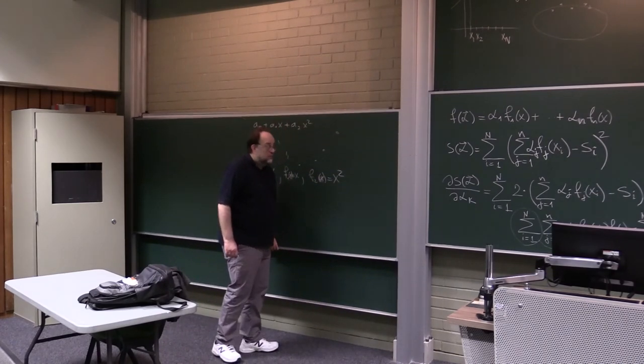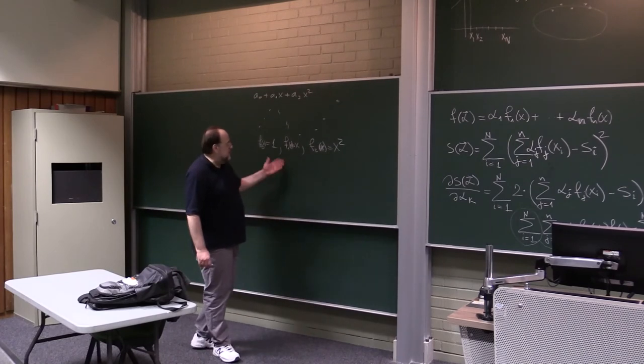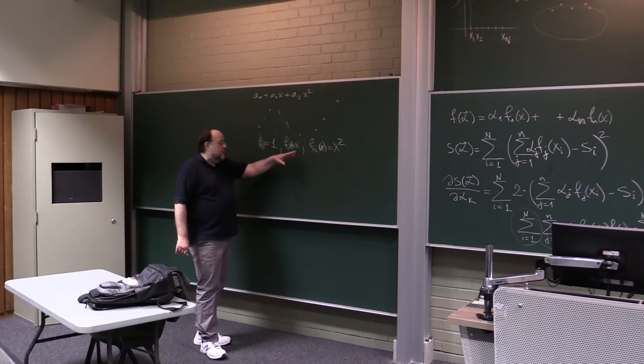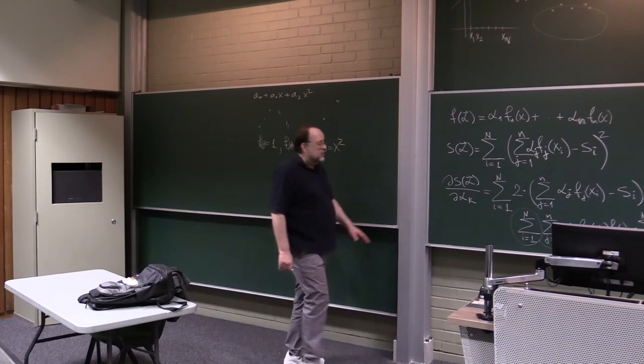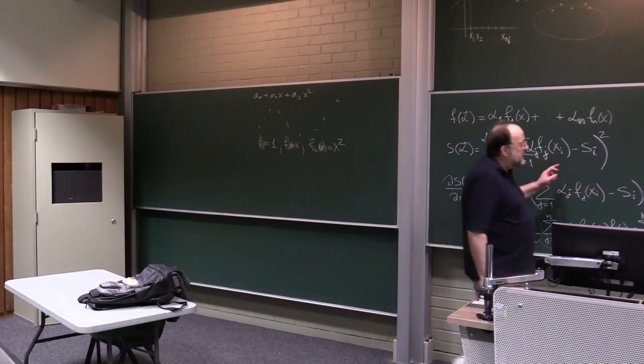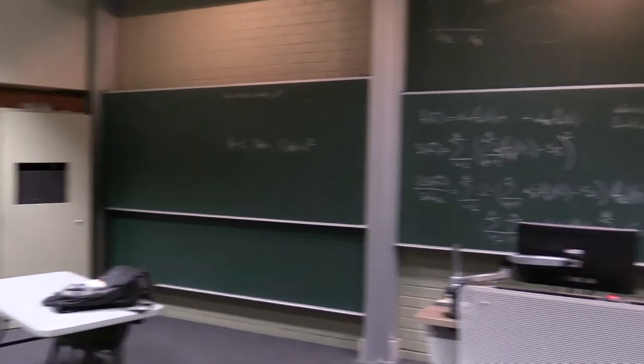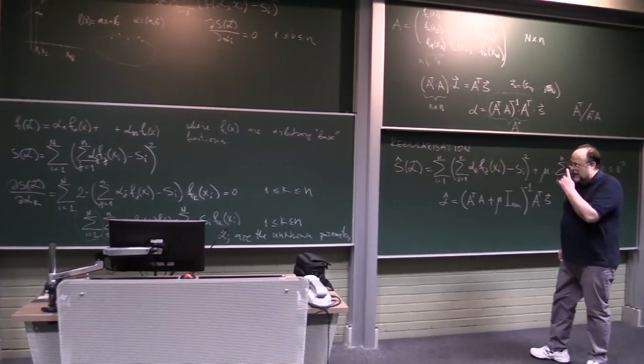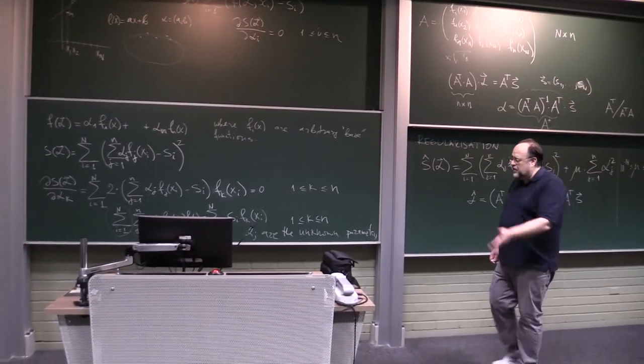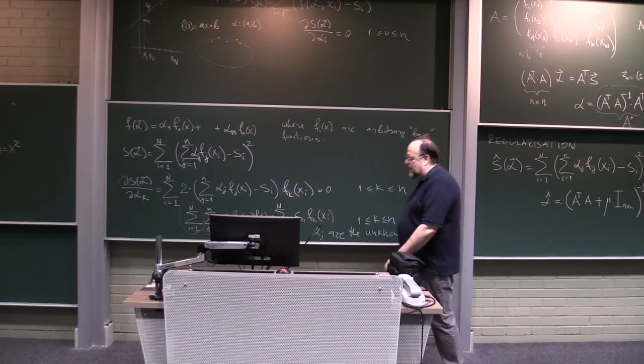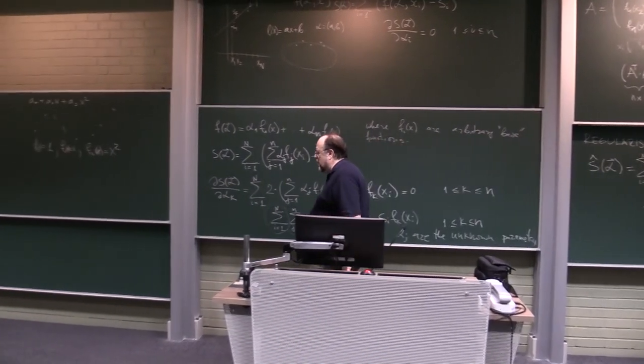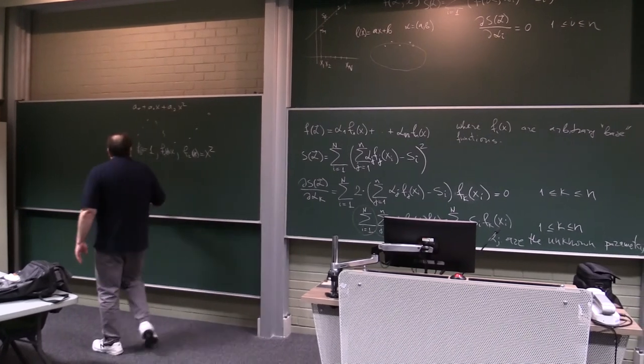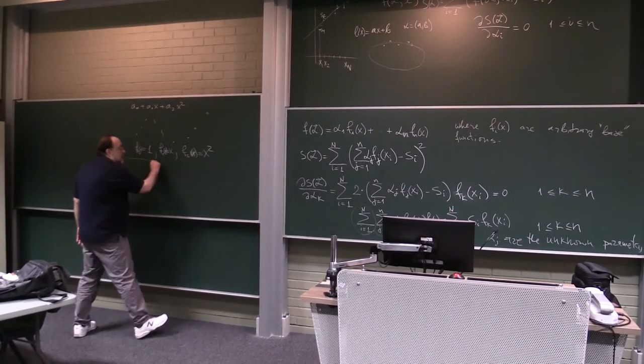Usually one uses something called splines, which are piecewise polynomials that are sufficiently smooth on the junction points when you transit from one polynomial to another. But you might want to generate some data in Python and try a few fits. Try to do it without regularization and with regularization and see what you get. So for this curve fitting, least squares are indispensable and very important.